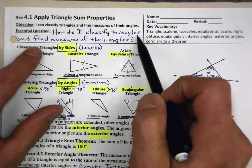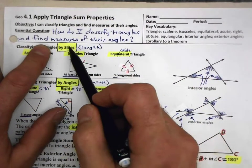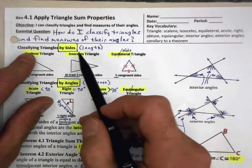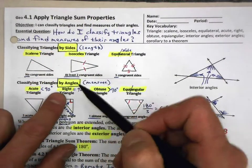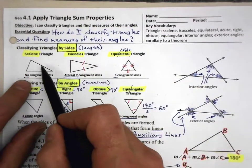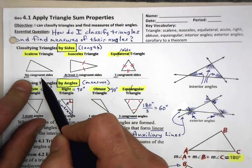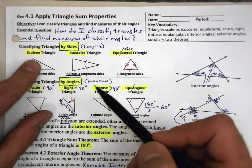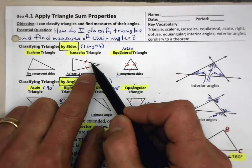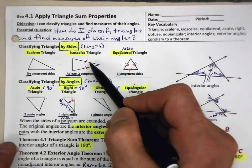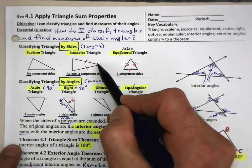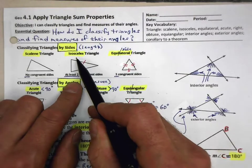How do I classify triangles? You know how to do that — and find measures of their angles. Let's first remind yourself how to classify triangles. We can do that by their sides or by their angles. When we classify triangles by their sides, either we have none of the sides congruent — none of the sides are the same length — that's called a scalene triangle. Or two of the sides are congruent, meaning they have the same length.